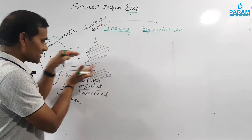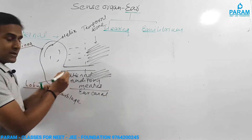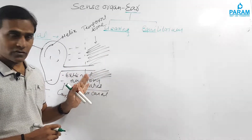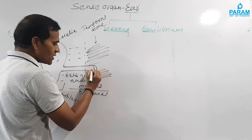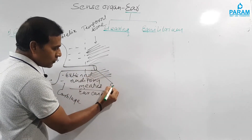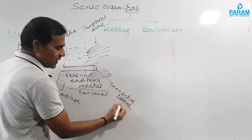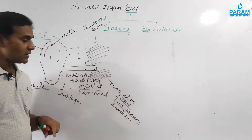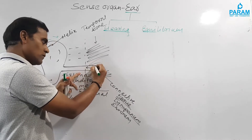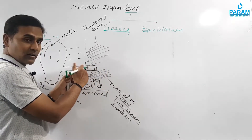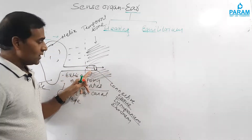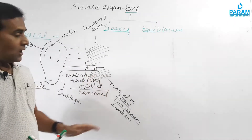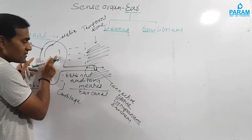Anatomically, the ear canal is placed obliquely to protect the internal part of the ear from entry of outside substances. It ends with an obliquely stretched piece of connective tissue called the tympanum, or tympanic membrane, or simply the eardrum. This stretched connective tissue faces the ear canal on one side — made of skin — and faces the middle ear on the other side, which is made of mucus.